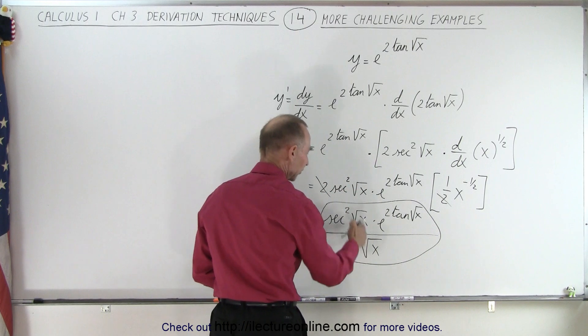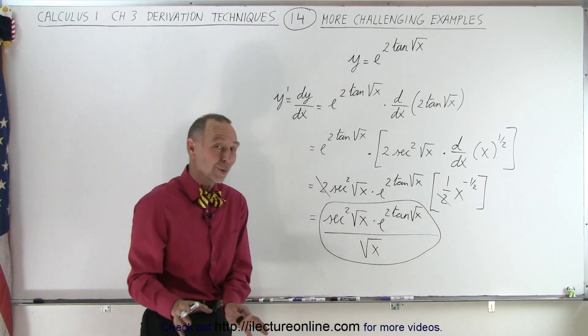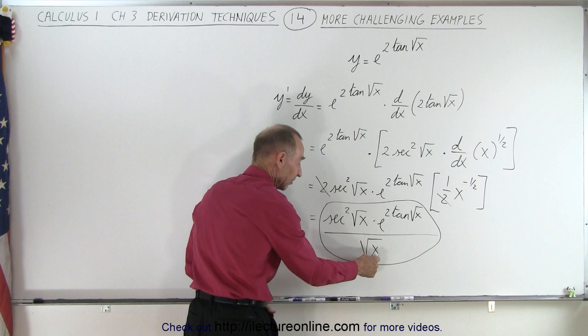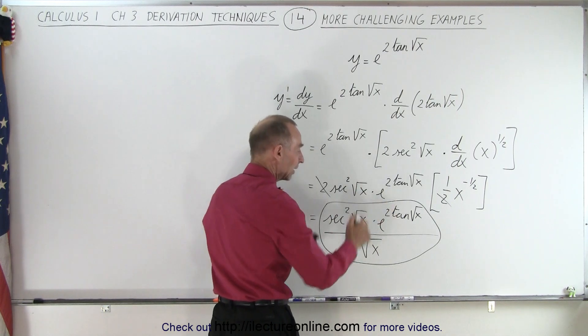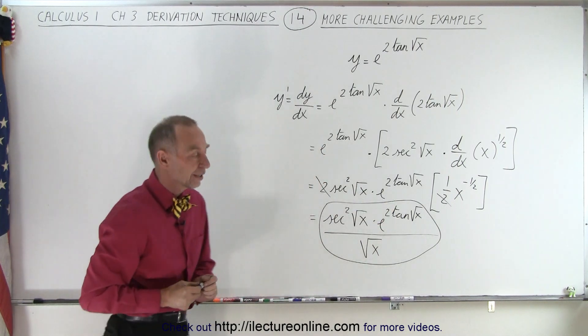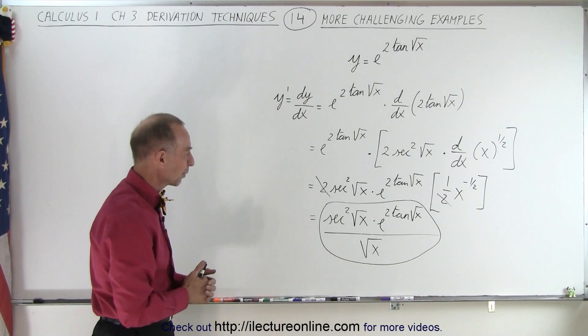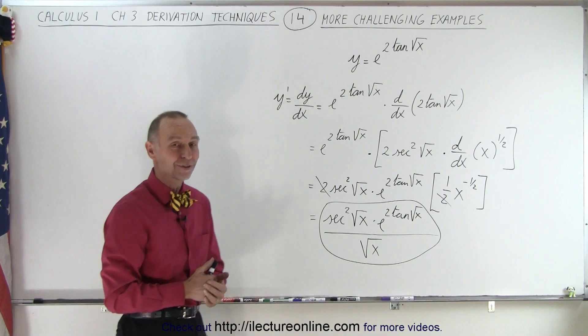Now, of course, be careful. Don't try to cancel those two out, because this is the angle of the secant square of x, and this is simply the square root of x. But that is, eventually, the derivative of what we started with. And that is how it's done.